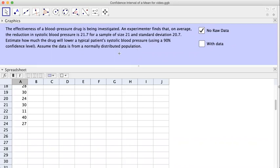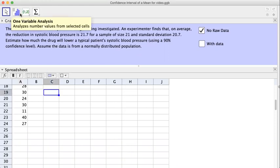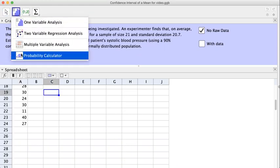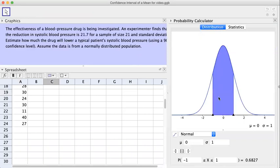Now you have your screen and you will see something that looks like this in the middle right here. We're going to use this one to find a confidence interval.